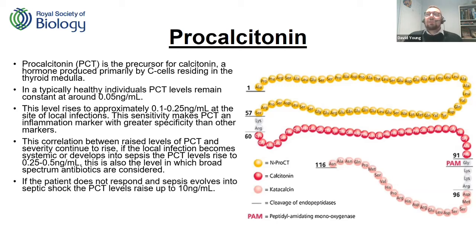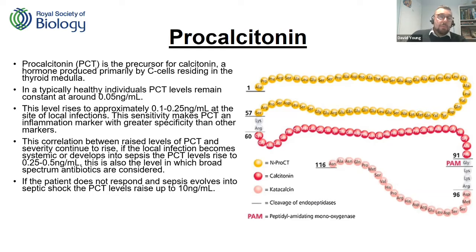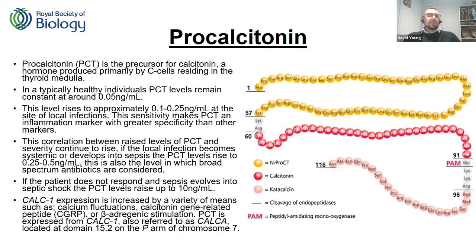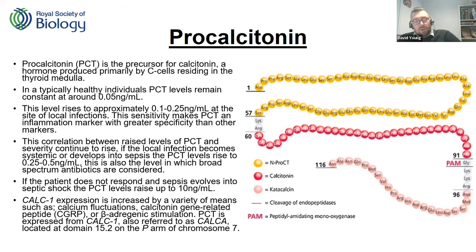As infection and sepsis progress, you end up in septic shock where PCT levels rise to anything up to 10 nanograms per millilitre. This is really specific to infection — unlike C-reactive protein, which isn't that good a biomarker. I only have to cough funny and my CRP levels go through the roof. We are also looking at the CalC1 gene at the hospital — specifically some types of mutations in specific places found on chromosome 7p, domain 15.2. That's procalcitonin: one molecule at play.